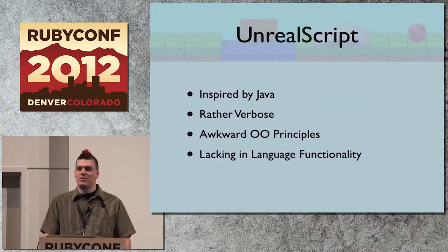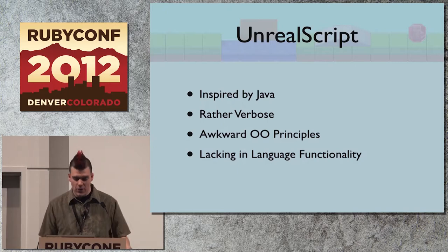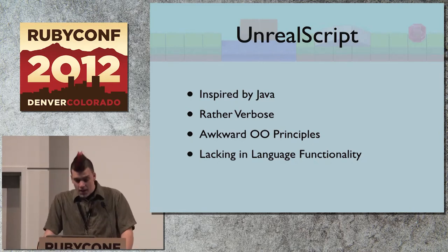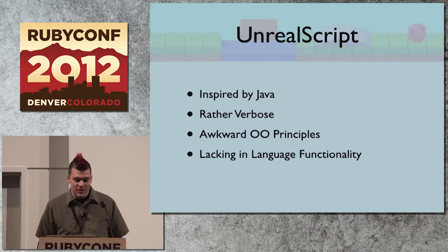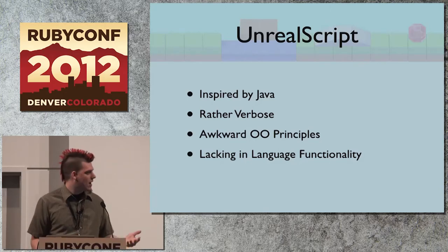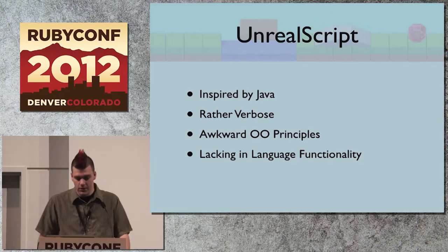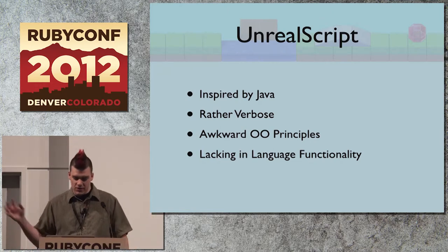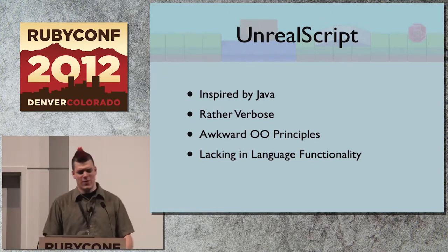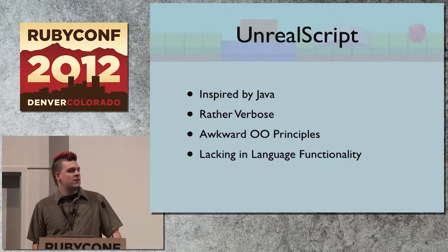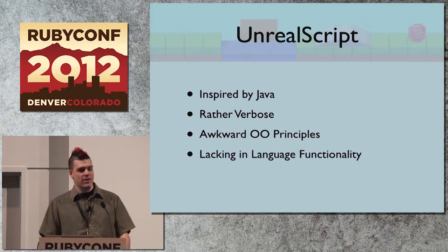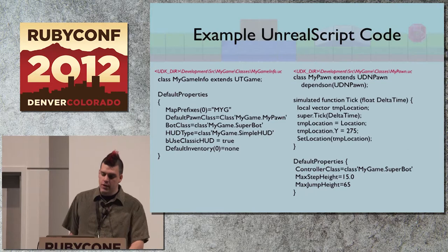And then there was the other side of it: UnrealScript. UnrealScript was the core component that glued everything together so you wouldn't have to go down to the C++ level. It was designed by Epic Games and inspired by Java. It's a rather verbose scripting language with some rather awkward OO principles. There were a lot of language components that they just threw out — like constructors and destructors are gone. I generally found that my main problem was in dealing with this scripting language, but I didn't really find much better than it.